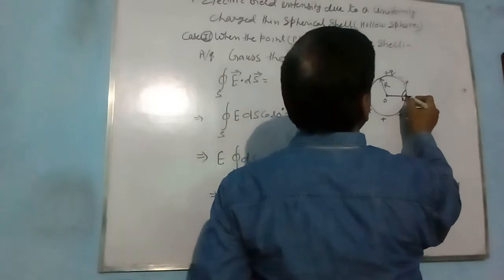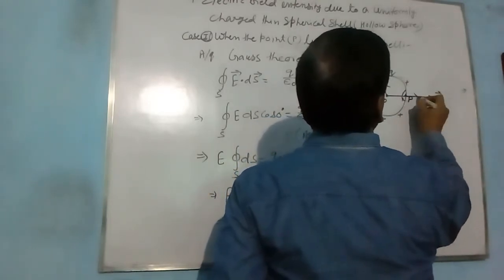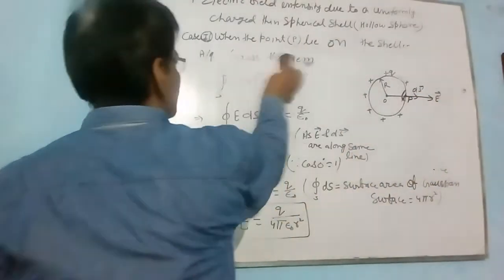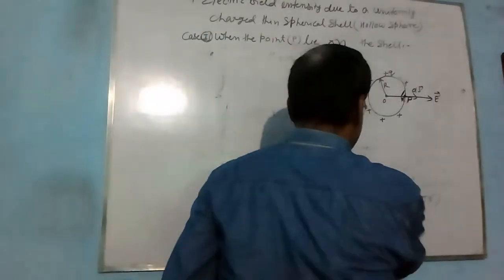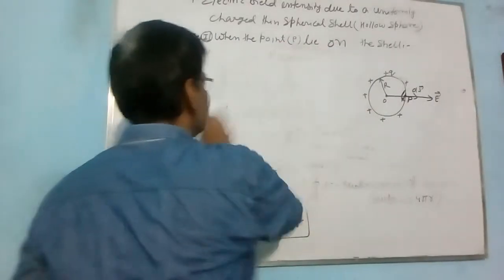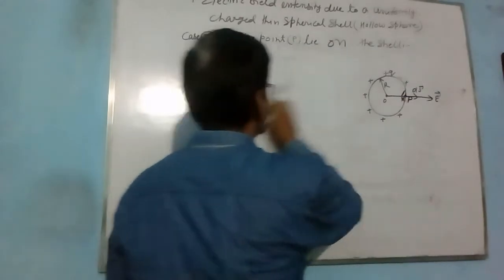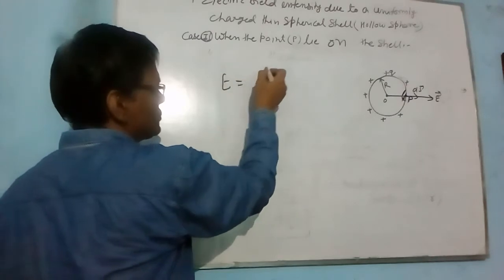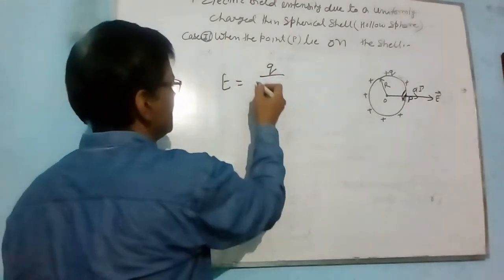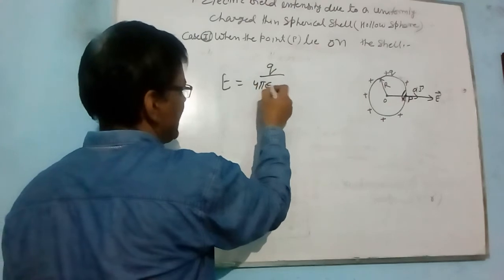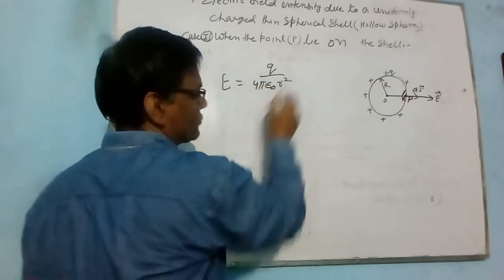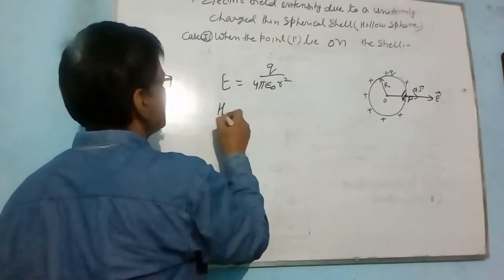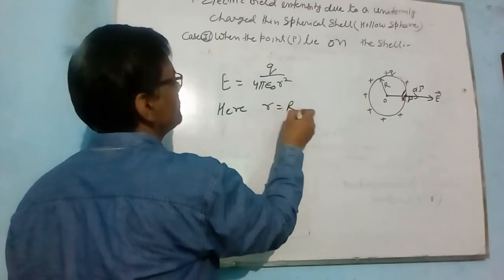Again, we take the small area vector dS, E and dS. As we find, since E equals to Q by 4πε₀R².